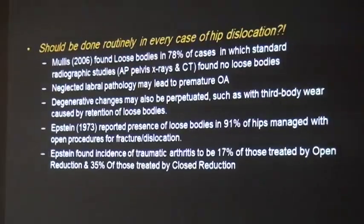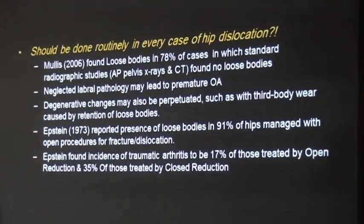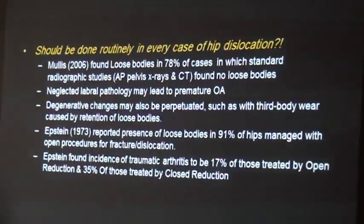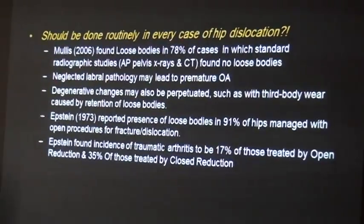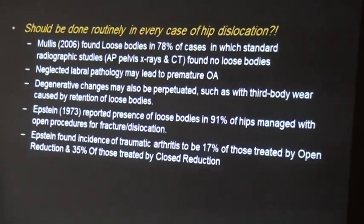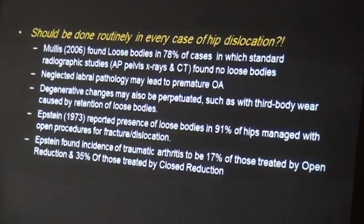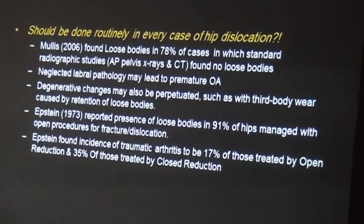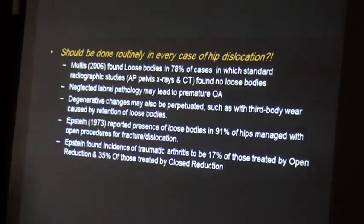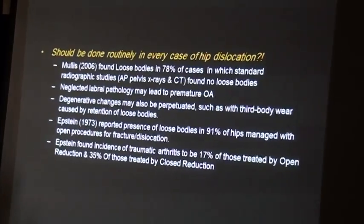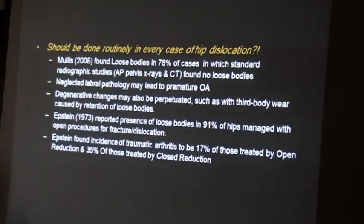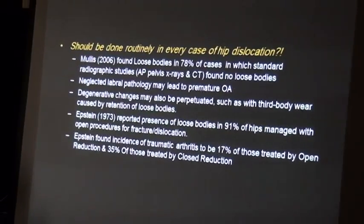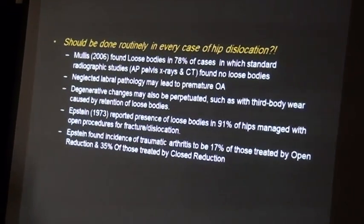Epstein in 1973 reported the presence of loose bodies in 91% of hips managed with open reduction for fracture dislocation. Epstein found the incidence of traumatic arthritis to be 17% in those patients treated by open reduction and 35% in those treated by closed reduction.